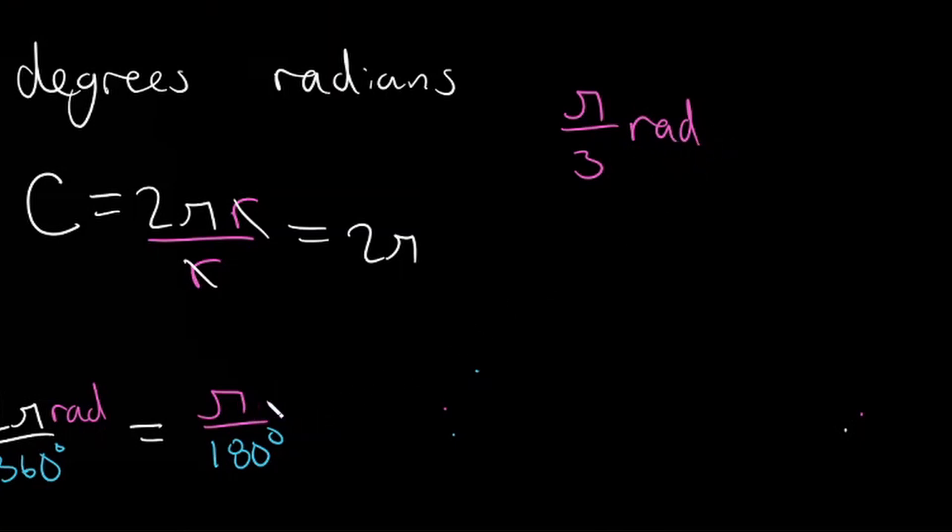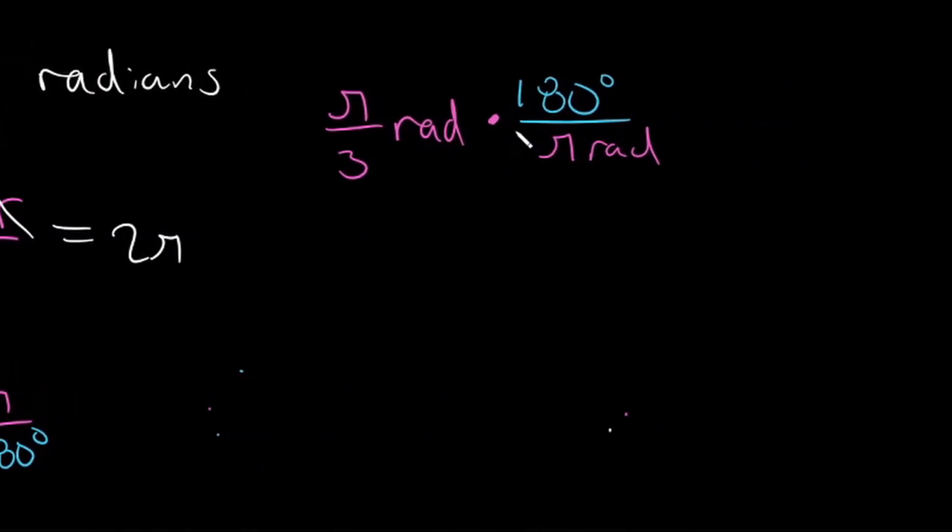So we wouldn't multiply by pi over 180, we would instead multiply by 180 over pi. So that way, our radians will cancel and we will be left with degrees.